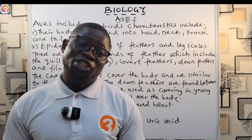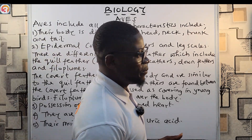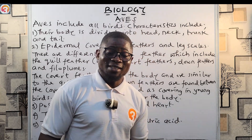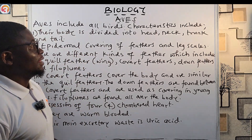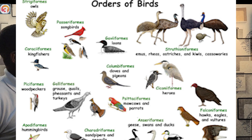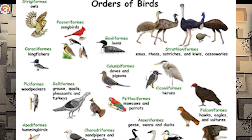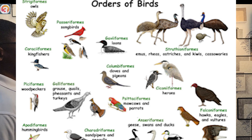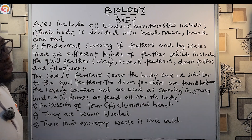Birds are special vertebrates — I love birds, we see them everywhere. They are terrestrial and have special adaptations for terrestrial habitation. Birds include all the birds that we see; they are classified under the class Aves. Let's look at their characteristics.